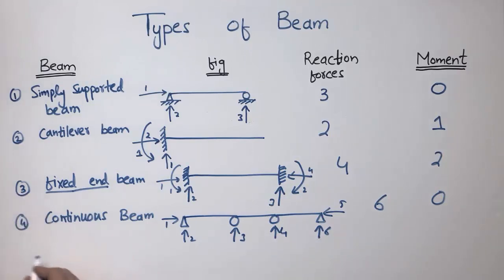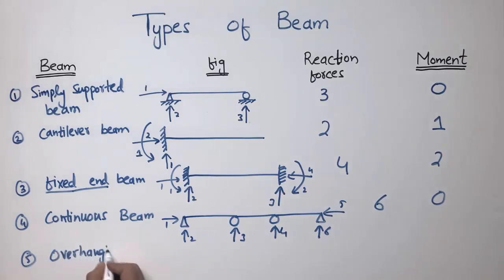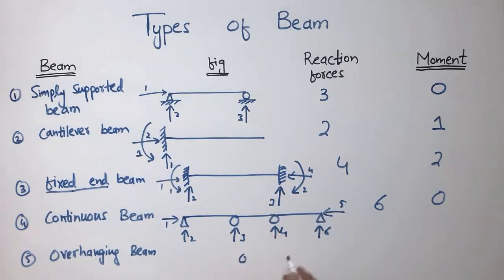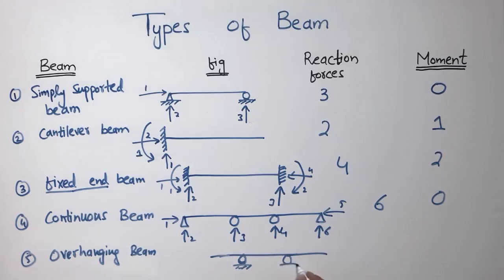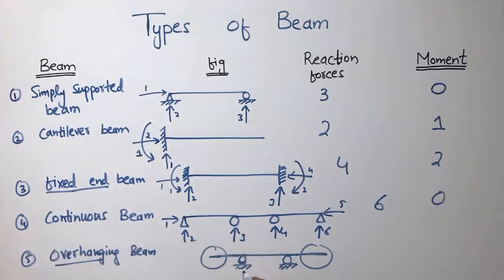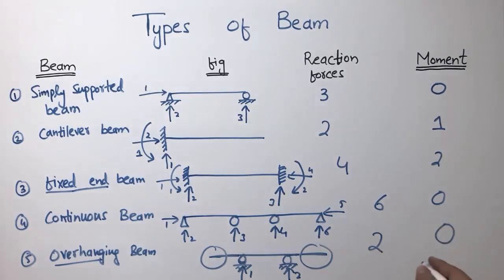The other type of beam is the overhanging beam. In this type, portions of the beam overhang on each side beyond the supports. The supports are provided in the middle region, and both sides of the beam are overhanging with no support at the ends. There are two roller supports giving one vertical reaction each, so two support reaction forces in total, and it cannot resist moment.